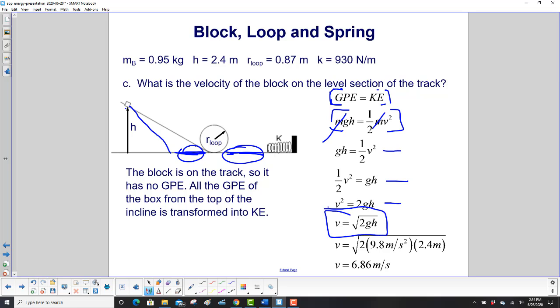That will become very familiar to you the more you do physics problems, that the velocity of an object coming down from a height is the square root of 2g times the height. We then substitute in our values, and we find the velocity of 6.86 meters per second at the bottom, which is greater than the velocity we found up there.